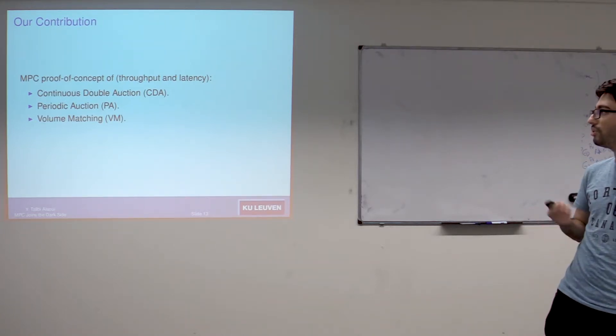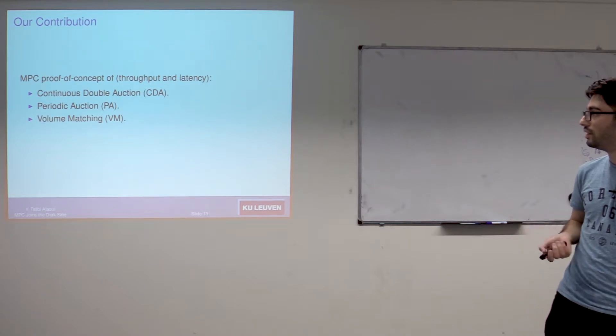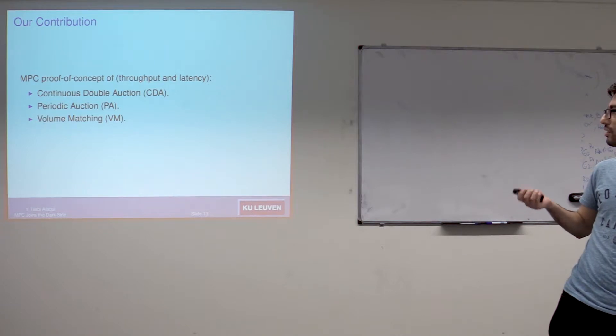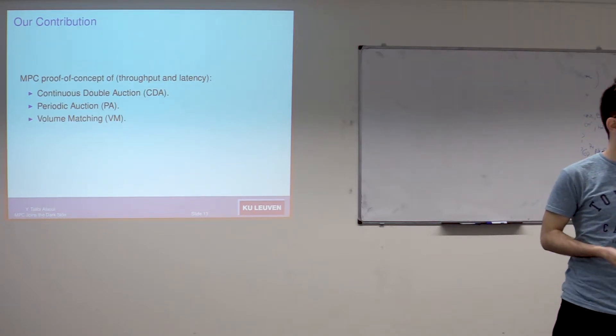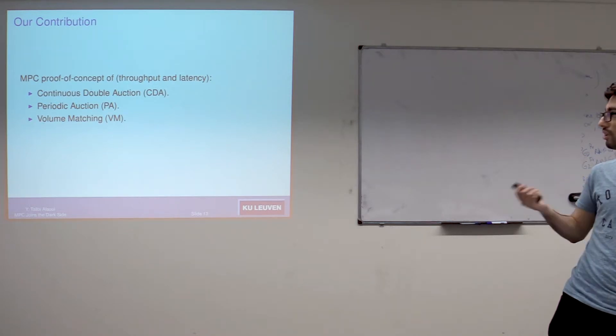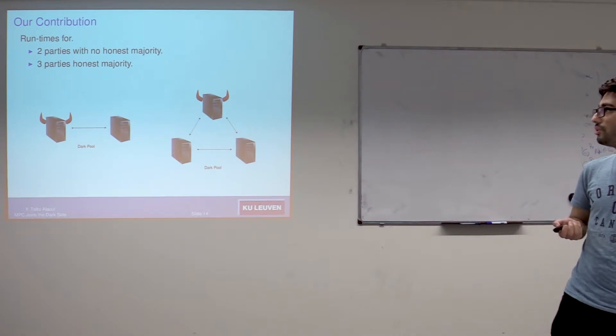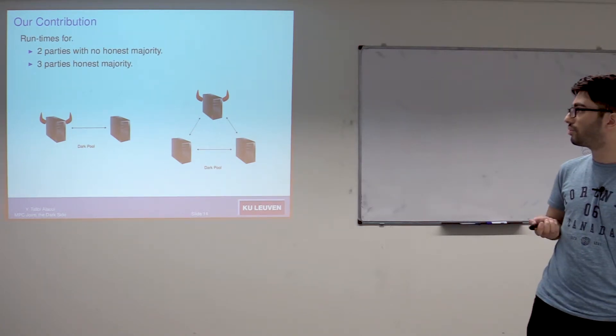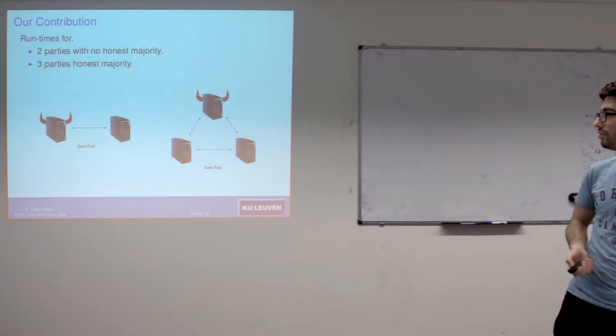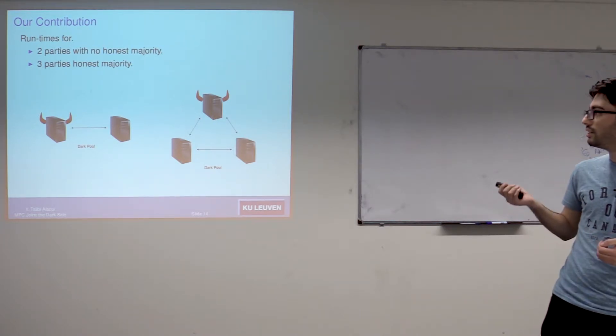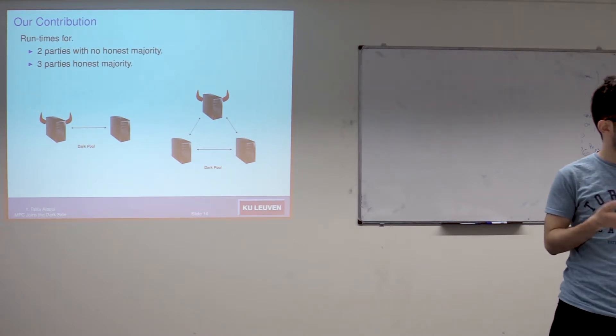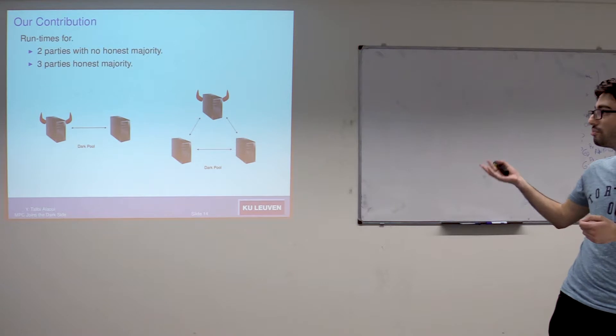In this paper we did an MPC proof of concept of that, taking into account the three main auction algorithms used in the dark markets, which I will explain in the next slides. In this proof of concept, we emphasized the throughput and the latency because they are the most relevant metrics to evaluate the performance of our solution. We consider two settings, which are the two parties with no honest majority and the three parties with honest majority. Within these two settings, the auction process is secure even in the presence of one malicious server.